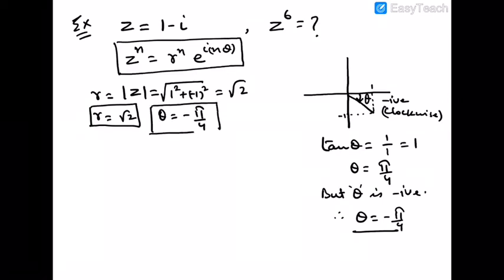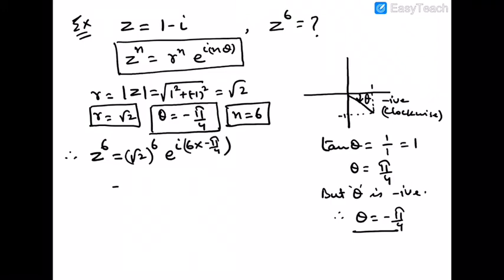So r equals root 2 and theta equals minus pi by 4. We just need to put the value of r and theta in our above equation. We will get z to the power 6 equals root 2 to the power 6, e to the power i 6 times minus pi by 4, which gives us 8 times e to the power i minus 3 pi by 2.